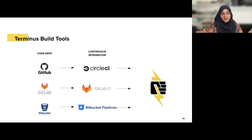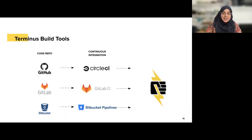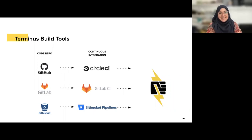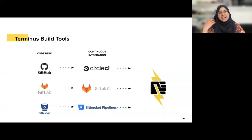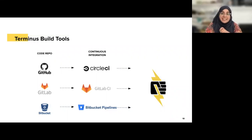So far we support three combinations: GitHub with CircleCI, GitLab with GitLab CI, and Bitbucket with its pipelines. We're currently working on a GitHub Actions integration because that is the new popular thing everybody wants. It will be great for our clients to be able to use GitHub to host their code repository and also have Actions plugged into it. There's an open PR, so if you're interested in testing that, please reach out to me and I'd be happy to get you connected.